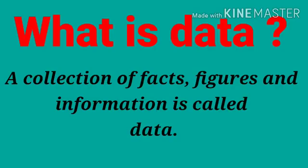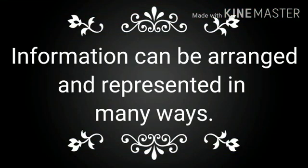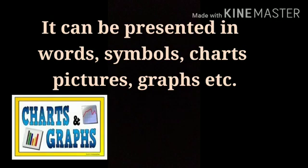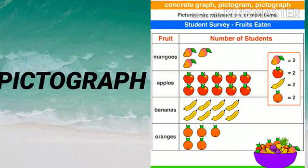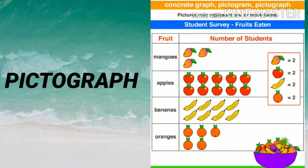But in how many ways can we express information? Information can be arranged and represented in many ways. It can be presented in words, symbols, charts, pictures, graphs, etc. When we use pictures or symbols to represent some information, it is called pictorial representation or pictograph.